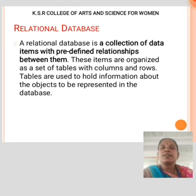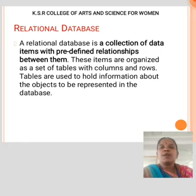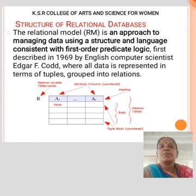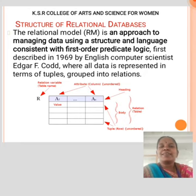A relational database is a collection of data items with predefined relationships between them. These items are organized as a set of tables with columns and rows. Tables are used to hold information about the objects to be represented in the database. A relational model is an approach to managing data using a structure and logic which consists of first-order predicate logic, first described in 1969 by English computer scientist F. Codd, where all the data is represented in terms of tuples grouped into relations.